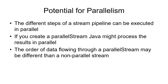Streams provide a potential for parallelism — the different steps in the stream can be executed in parallel. Java has the parallel stream class you can call, or you can simply add .parallel() in a series of methods. If you have a parallel stream, the order of the output may differ from a non-parallel stream since different parts operate in parallel. This is particularly important for MapReduce on large datasets, and it allows a program to easily use all available cores in a system.